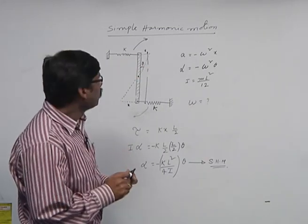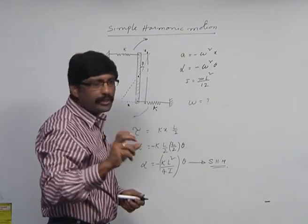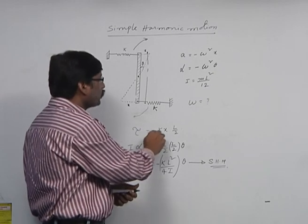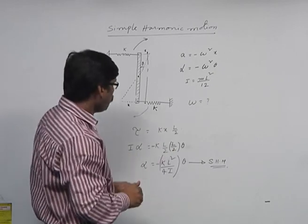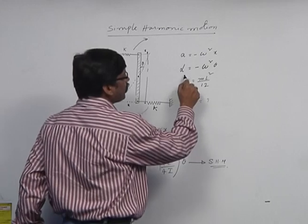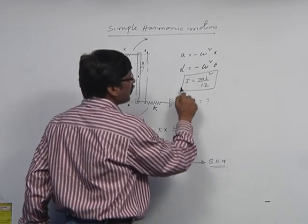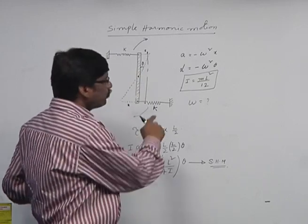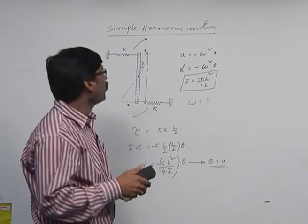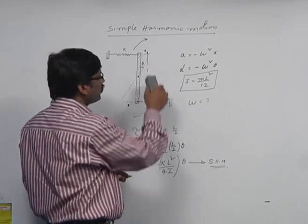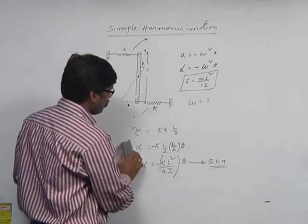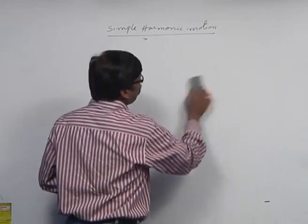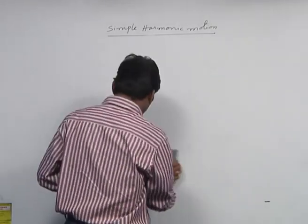So in this problem, not only simple harmonic motion knowledge but also rotatory motion knowledge is required — specifically tau equals I·alpha and the moment of inertia of the rod about a central axis. This problem combines oscillatory motion and rotatory motion. Let us now take up another related problem.